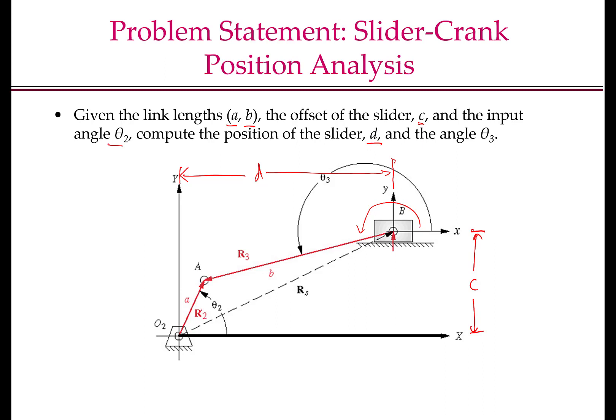So theta 2 is my independent variable — a variable that changes as the mechanism moves but is known for analysis purposes. The method for solving this problem is the same as for the position kinematics of the four-bar mechanism with all revolute joints. The first step is to write the vector loop closure equation, which requires assigning a vector to each link. O2A is the vector assigned to link 2, or the crank, and BA is the vector assigned to link 3, or the coupler.